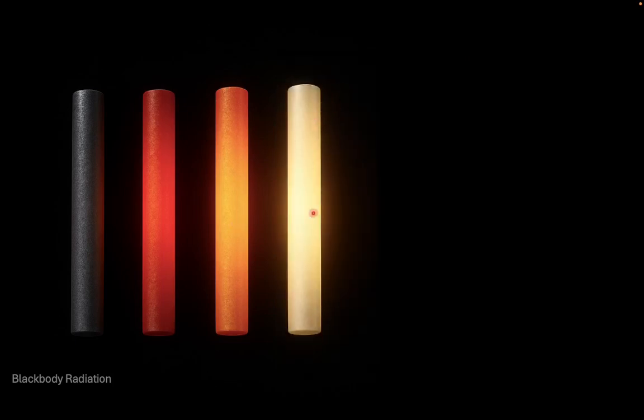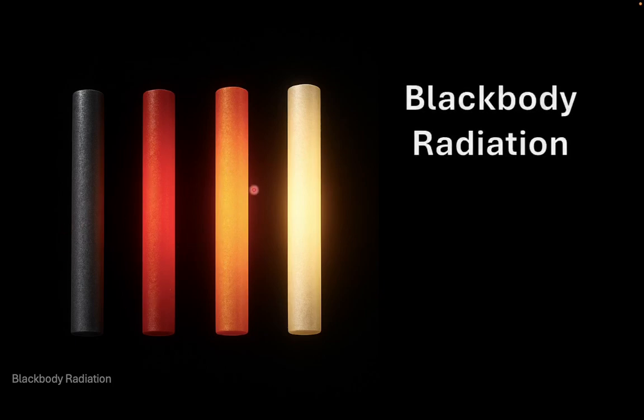Have you ever watched a piece of metal being heated? At first it doesn't glow, then it starts to shine red, then yellow, and eventually white as it gets hotter. We all know we shouldn't touch any of those, but have you wondered why it glows and changes color like that? This glowing effect is called blackbody radiation.